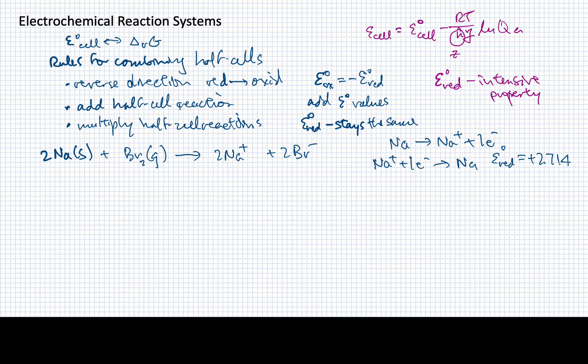The bromine, on the other hand, is going to have a reduction equation that looks like this, where we're adding two electrons to the bromine gas or liquid to form two bromide ions, and that has a standard reduction potential of plus 1.0652. So these are the two half-reactions that are relevant to this full reaction that we might be interested in.